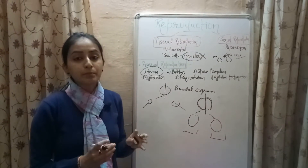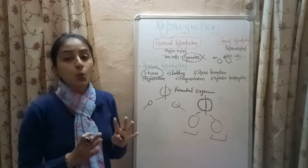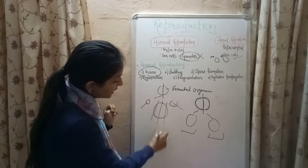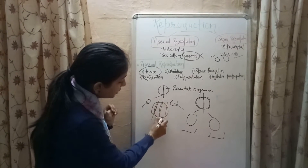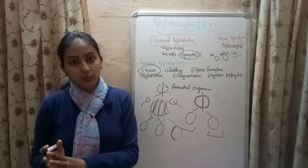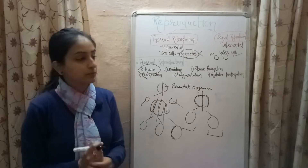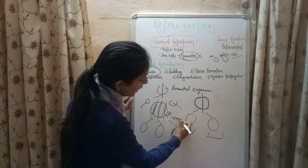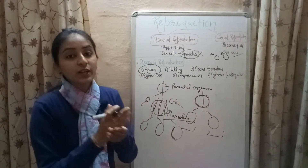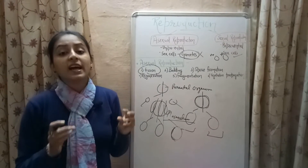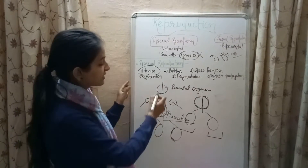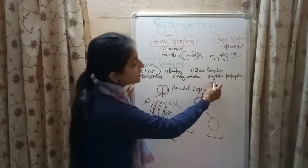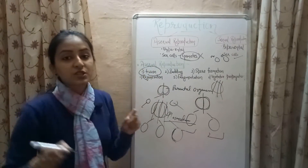Binary fission takes place in simple unicellular organisms like amoeba and paramecium. Multiple fission is the process in which the body of the parental organism splits into more than two parts, forming more than two offspring. Multiple fission takes place in the malarial parasite known as plasmodium. In binary fission the body splits into two parts forming two offspring, whereas in multiple fission it splits into more than two parts forming multiple offspring.